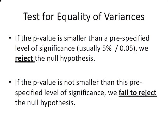Conversely, if we get a p-value that is not smaller than this pre-specified level of significance, we fail to reject the null hypothesis. What we're going to do now is set up R and look at two examples.